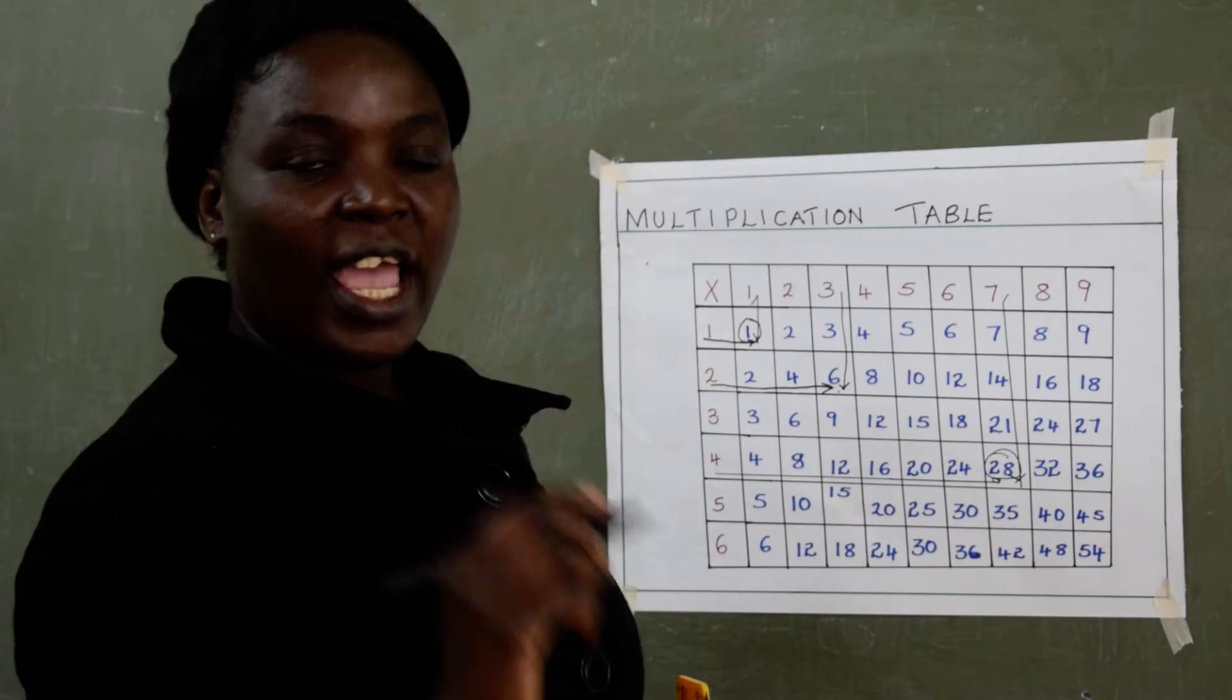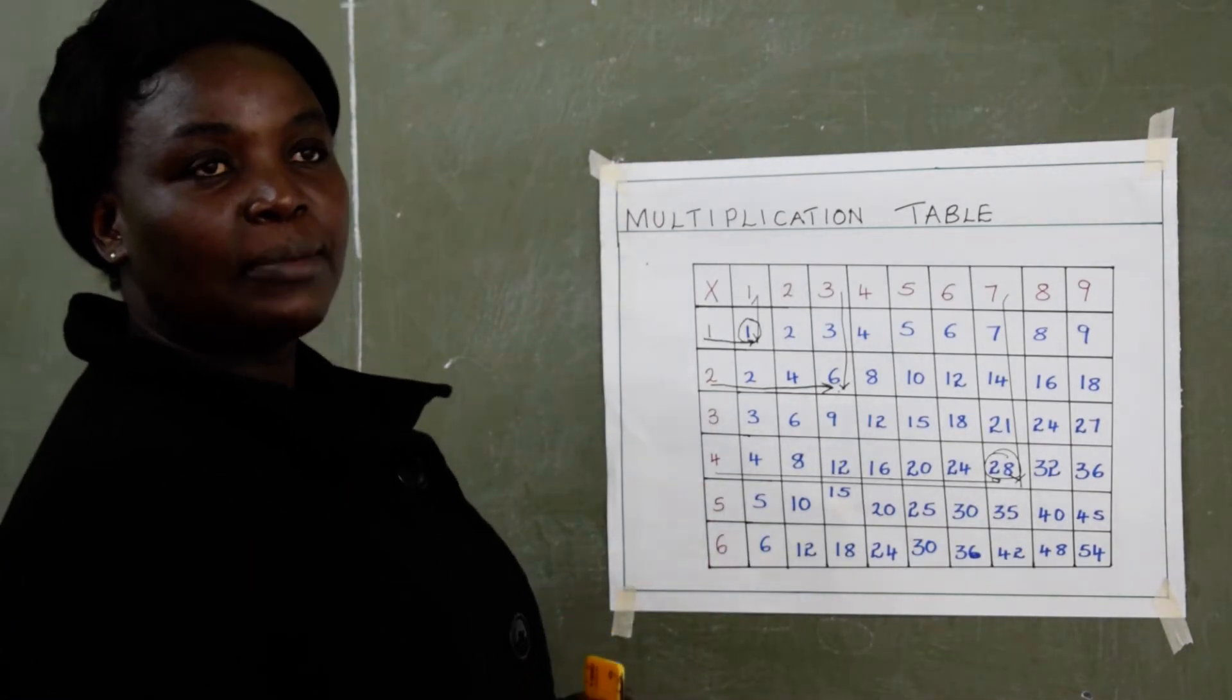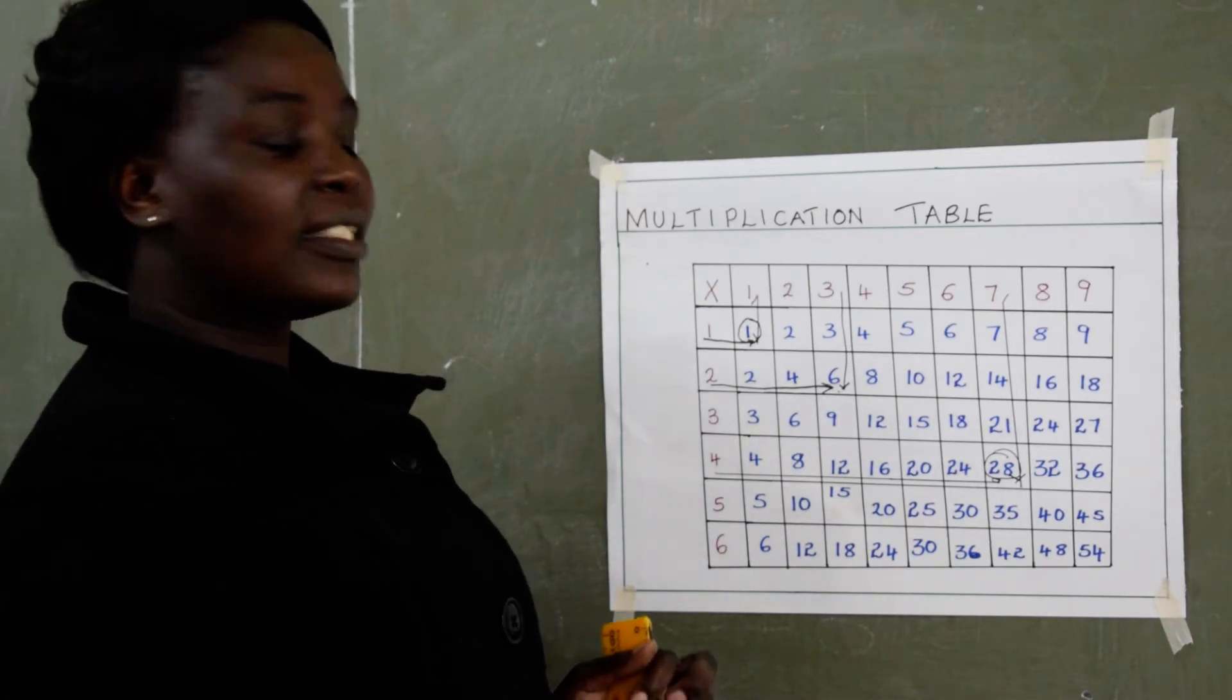So the 2 lines are meeting at number 28. So 4 times 7 is 28. Now let's try another one. Then we will go to our exercise. So 6 times 8.